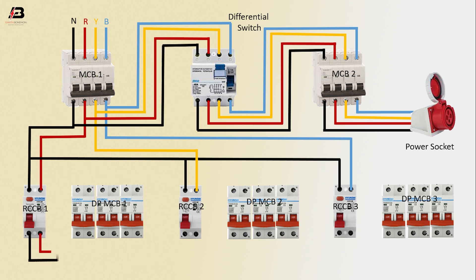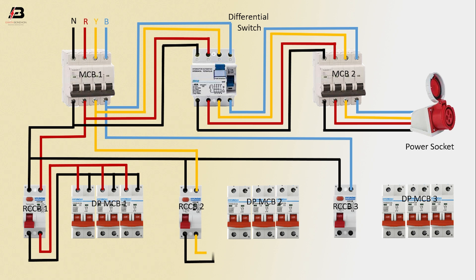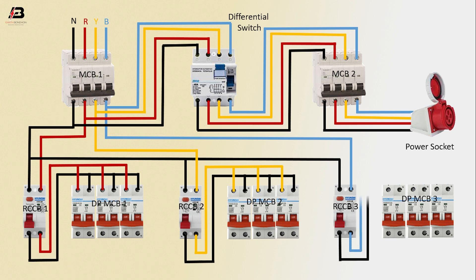Output connection from RCCB1 to connect DP MCB1. Again, output connection from RCCB2 to connect DP MCB2. Again, output connection from RCCB3 to connect DP MCB3.